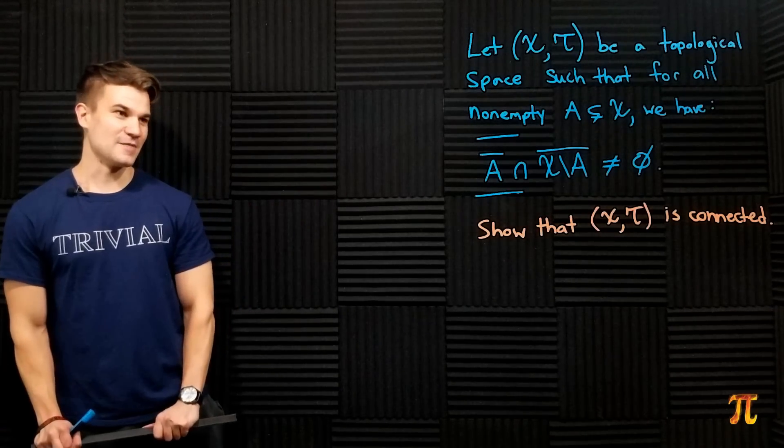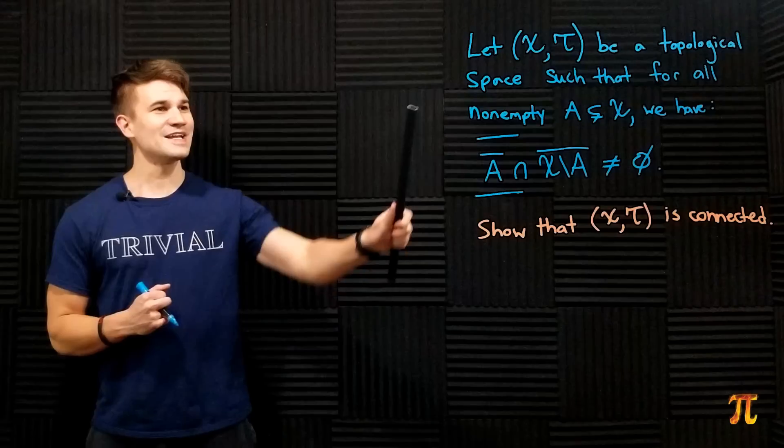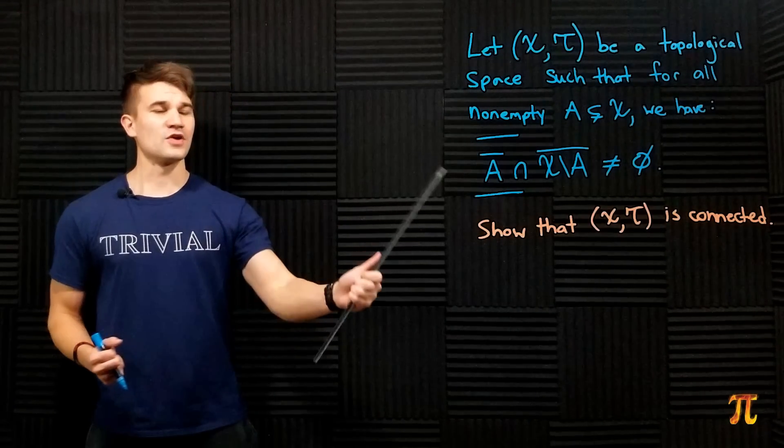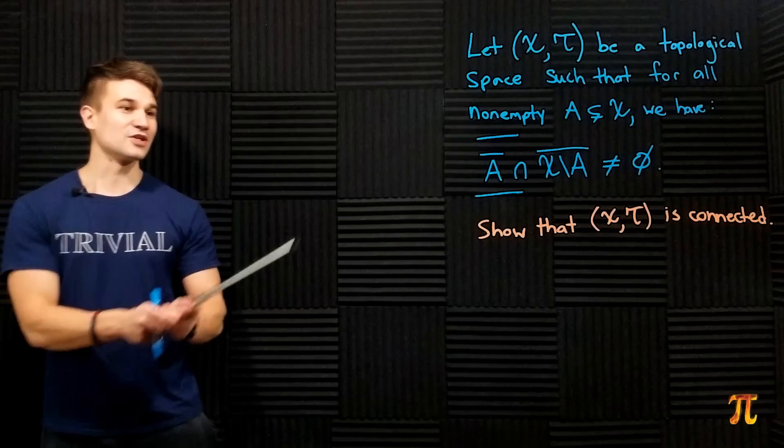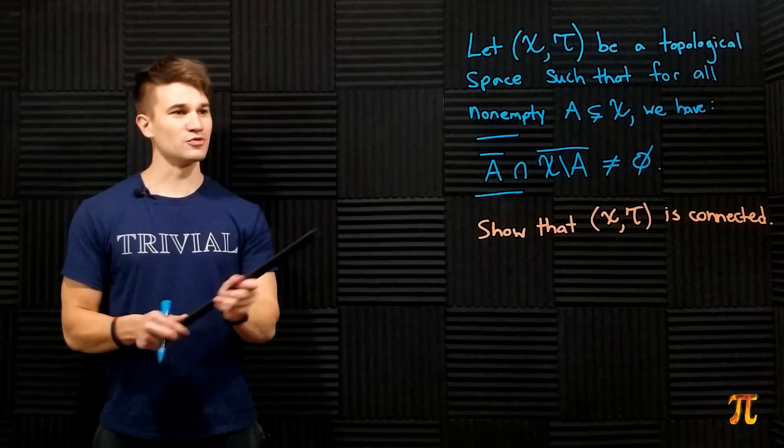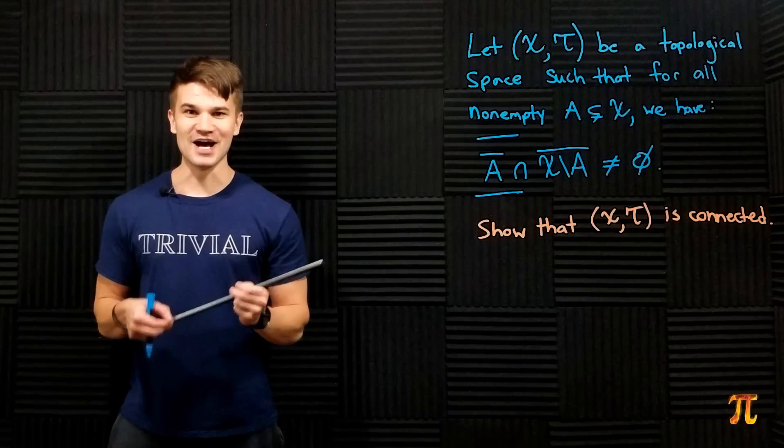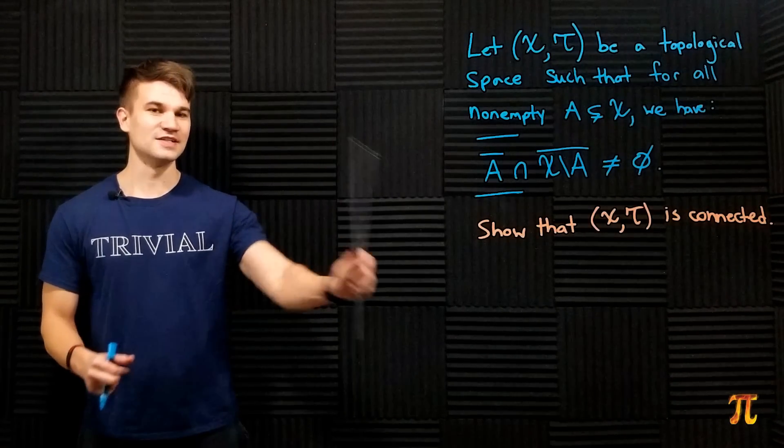Here's what we're trying to prove: Let (X,T) be a topological space such that for all non-empty A ⊆ X, we have that the closure of A intersected with the closure of the complement of A is non-empty. Show that (X,T) is connected.